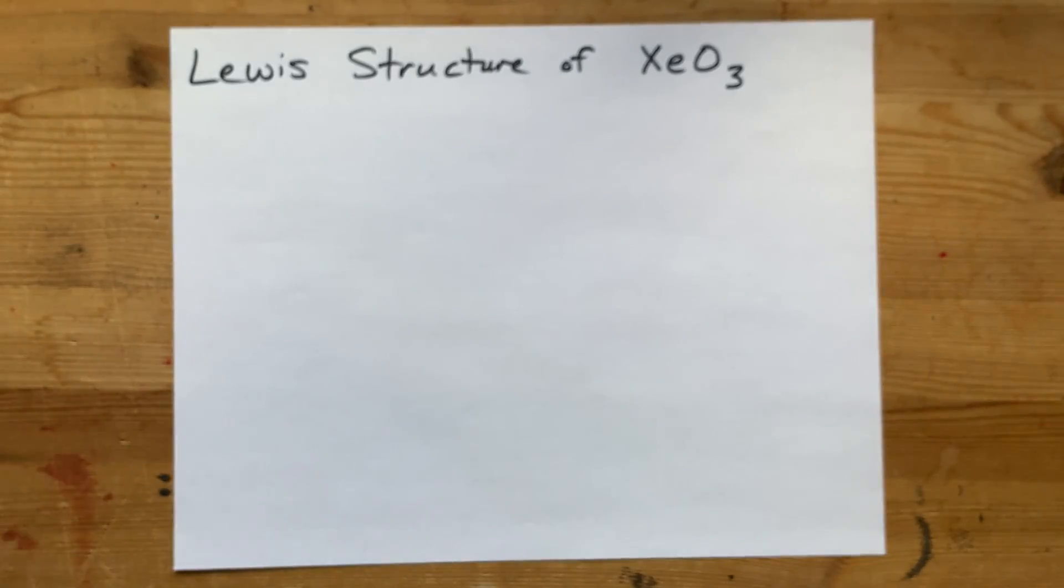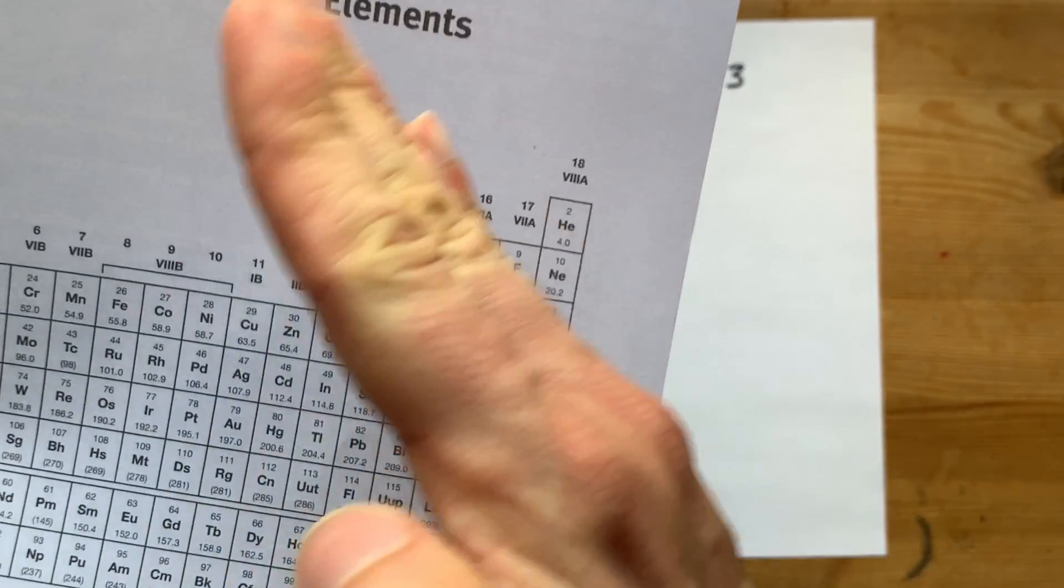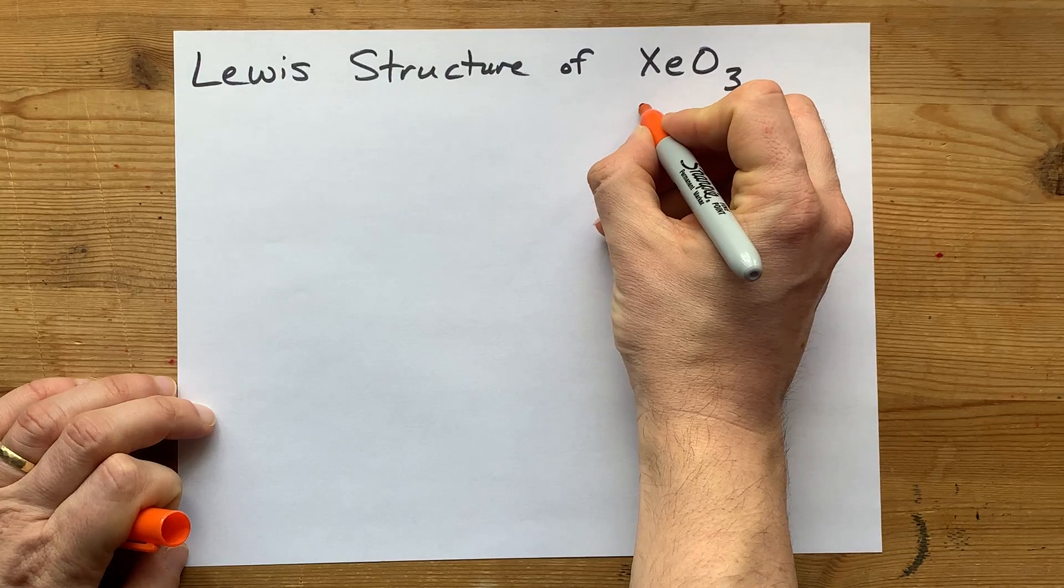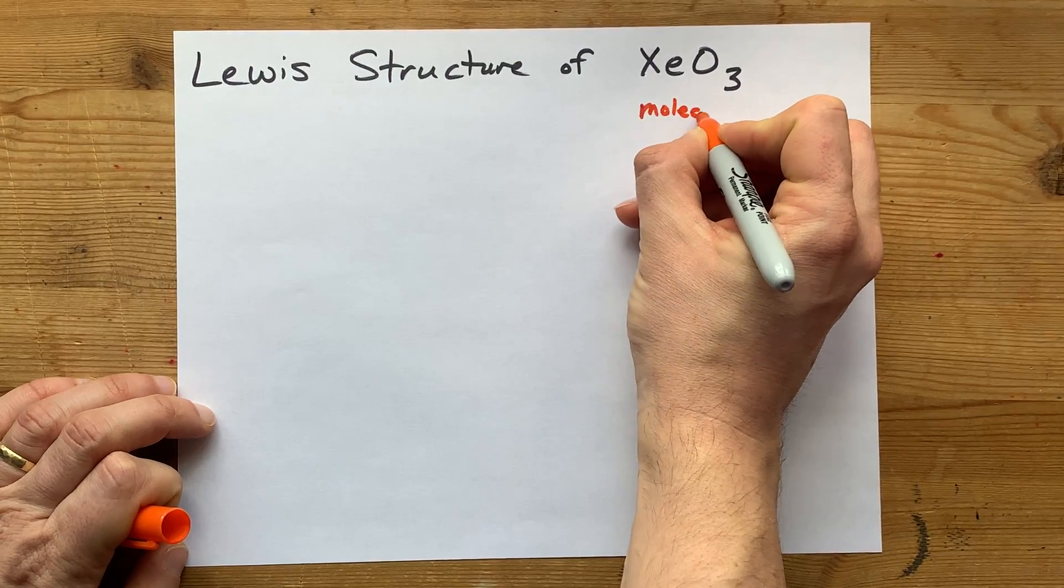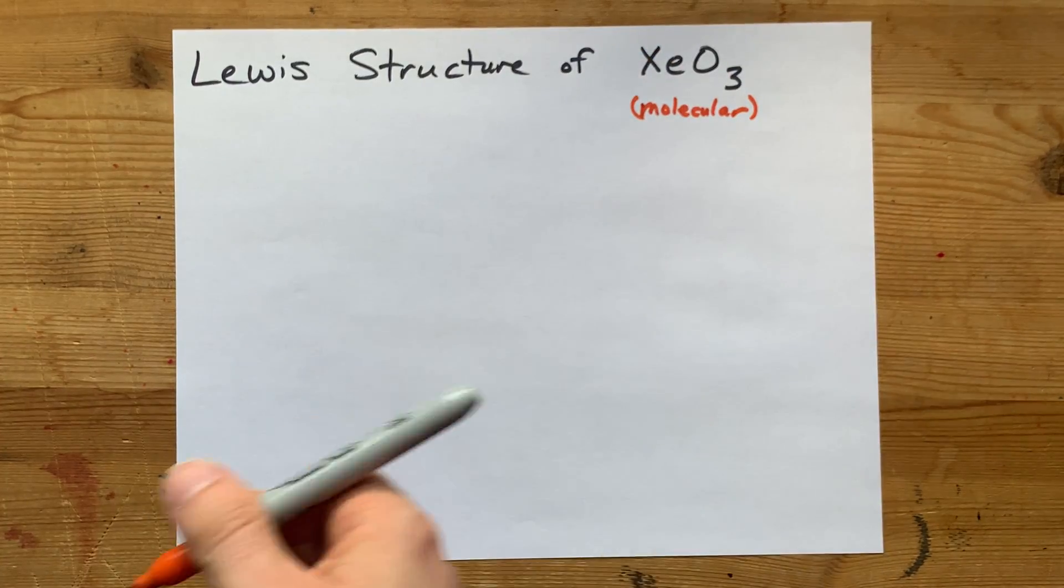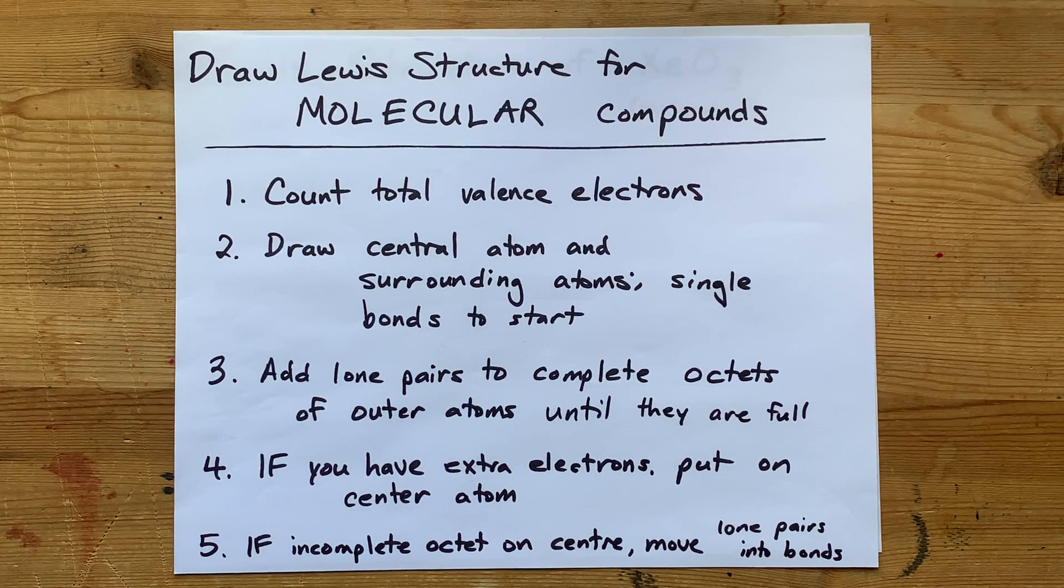I also want to point out that both xenon and oxygen are non-metals. They come from the right-hand side of the staircase. And so when non-metals bond together, they form molecular compounds. It means they're going to share electrons. And I have a method to draw the Lewis structure for molecular compounds.